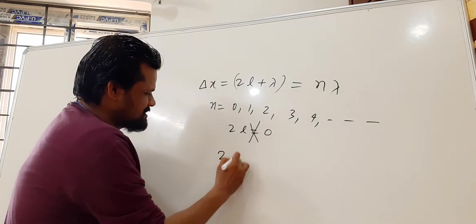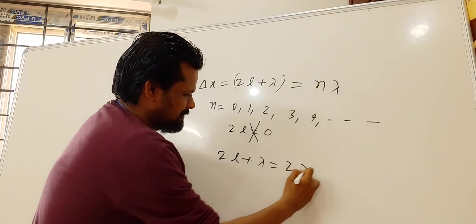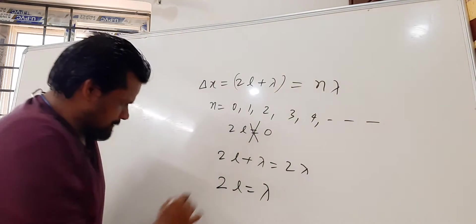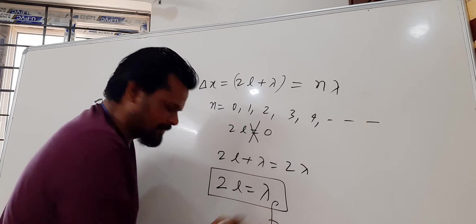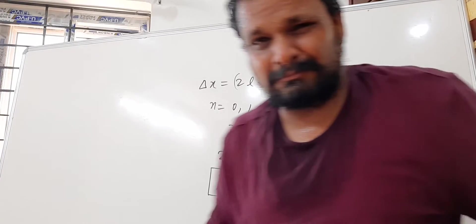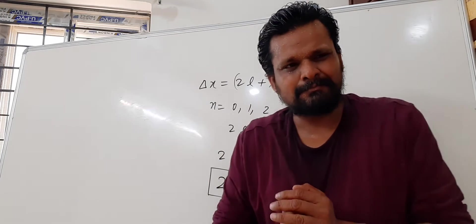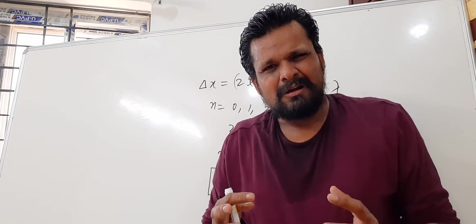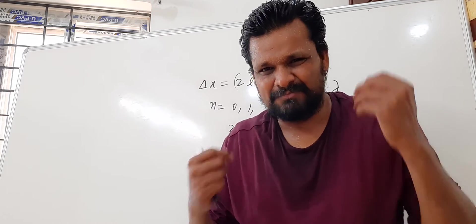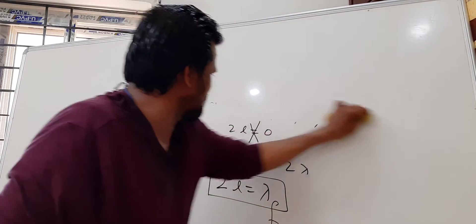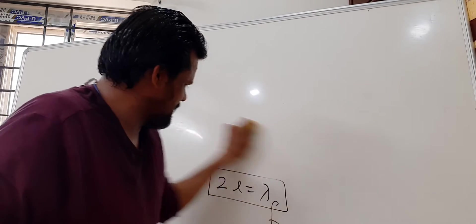Now change the value to n equals 2, which gives lambda equal to 2L. At this wavelength, constructive interference is present at the open end, which creates louder sound — this is where resonance happens. This applies to the open-open pipe, like flutes or other wind instruments.